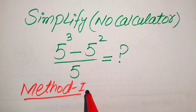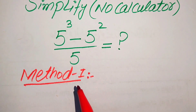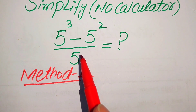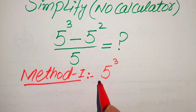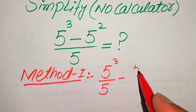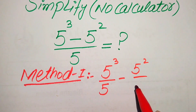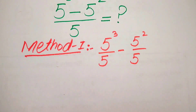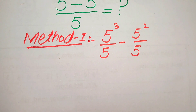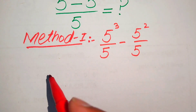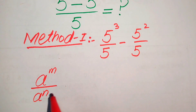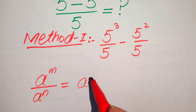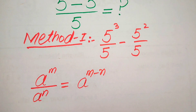In the first method, we break this fraction. When we break it, it becomes 5 cubed divided by 5, minus 5 squared divided by 5. After that, we use the exponent law: if we have a to the power of m divided by a to the power of n, it equals a to the power of m minus n.